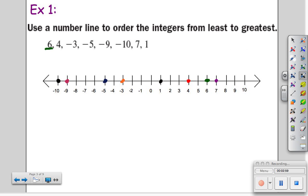Now that we have our number line, it's easy to see which is the furthest value to the left, or which is the smallest number. So to write these numbers from least to greatest, I'm going to go from left to right. So I'm going to start with negative 10, followed by negative 9, negative 5, negative 3, positive 1, positive 4, positive 6, and finally positive 7.